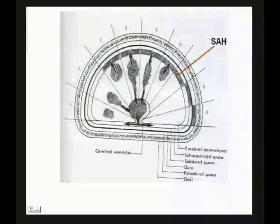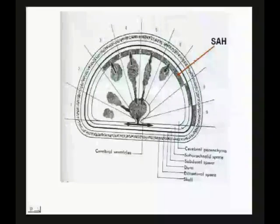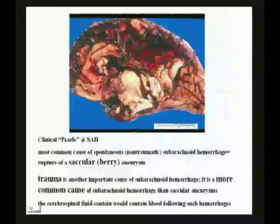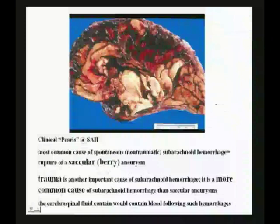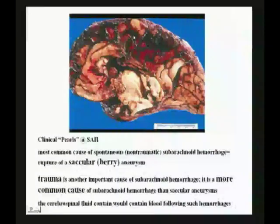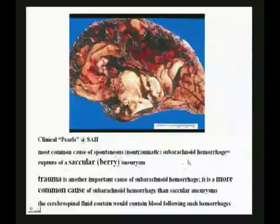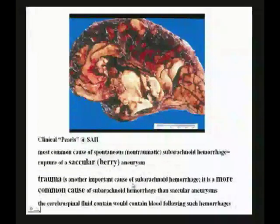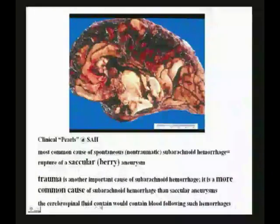Let me show you what the brain looks like when the hemorrhage is kept to the subarachnoid space, and then one where it burst into the parenchyma. You can see bleeding from subarachnoid hemorrhage in the subarachnoid space. The most common cause of spontaneous hemorrhages are berry saccular aneurysms. However, trauma is also an important cause of subarachnoid hemorrhage — in fact it's more common than these spontaneous aneurysms. Also know that CSF will contain blood in cases of subarachnoid hemorrhage.